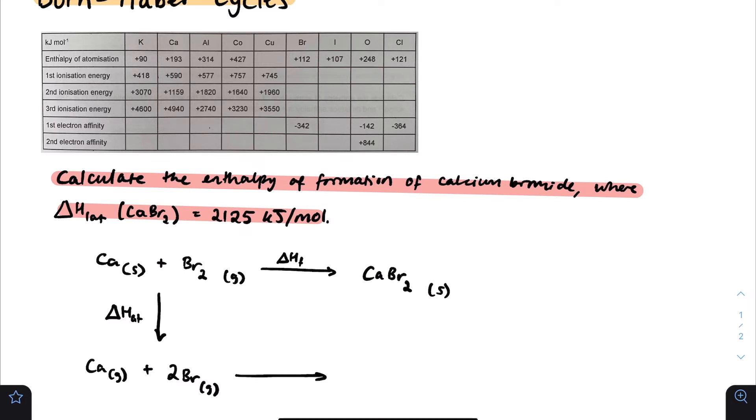This letter will be our ionization energy, delta H_IE and delta H_EA. EA is electron affinity, whereas IE is ionization energy, which gives us Ca2+ gaseous plus 2Br- gaseous. Our final one is our lattice enthalpy, H_lat. Now we've constructed our Born-Haber cycle, we can find what we're looking for. They want the enthalpy of formation, which is H_F.